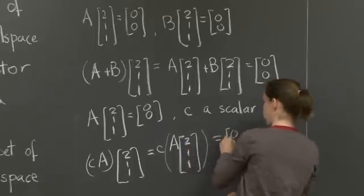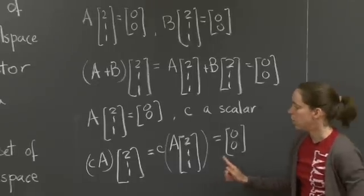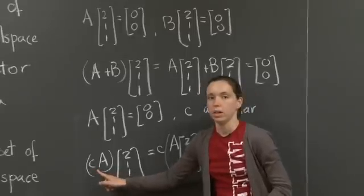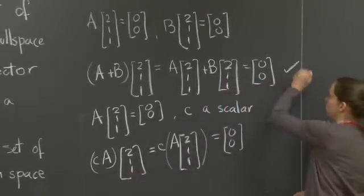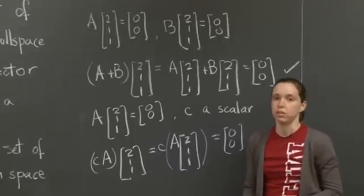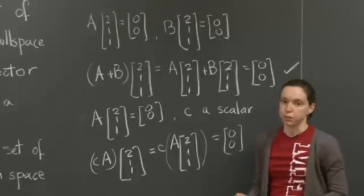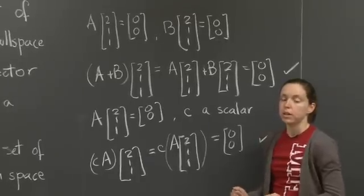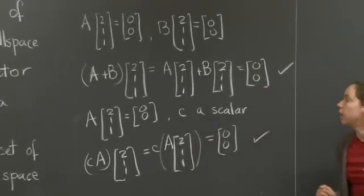So this will simply be C times 0, 0, which is 0, 0. So the matrix CA is also contained in the set. So the set is closed under addition and multiplication by scalar. So the set is indeed a vector subspace. Well, that takes care of the first part of the question. The second part was find the basis for this subspace. So let's work on that now.